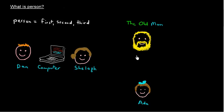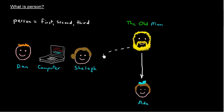In order to find what first, second, and third mean, it's probably easiest if we show a diagram of the production of a sentence. So the old man is going to speak, in this case, the sentence to Ada. And he's going to speak about Dan, Sheila, and the computer.